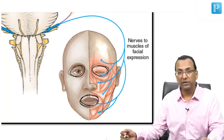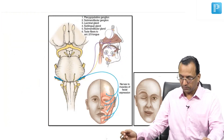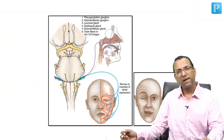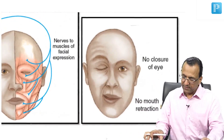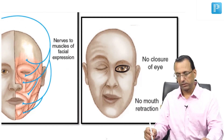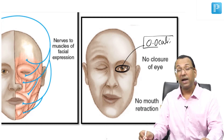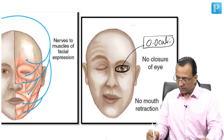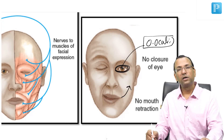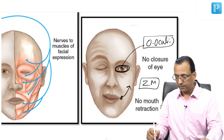Now let's discuss a patient — look at this patient. What happened here? Bell's palsy. There is failure to close the eyelids because orbicularis oculi is paralyzed on the left side, and the patient cannot smile because zygomaticus major is not working.